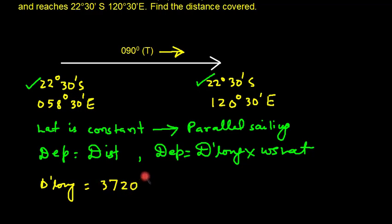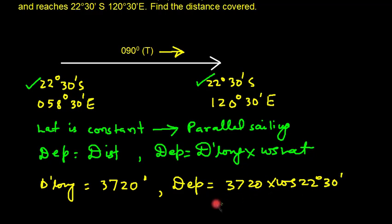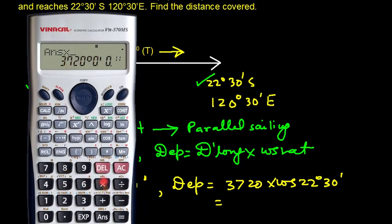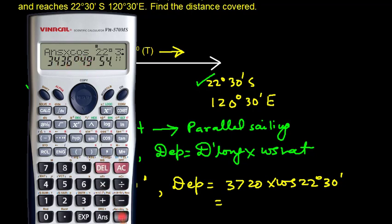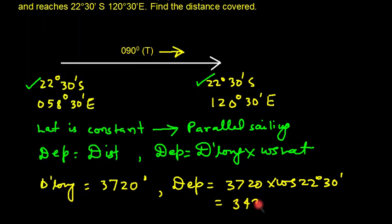Now finding Departure: 3720 × cos(22°30'). Using the calculator: 3720 × cos(22°30') = 3436.8 nautical miles. The distance is 3436.8 nautical miles.